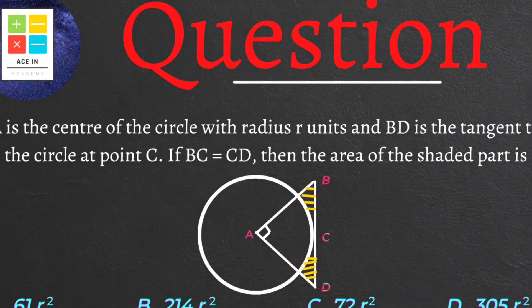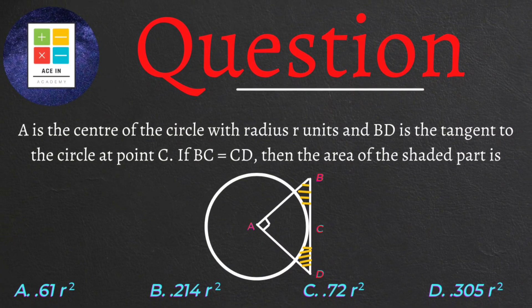The question is as follows: A is the center of the circle with radius r units, and BD is the tangent to the circle at point C. If BC equals CD, then the area in square units of the shaded part is?